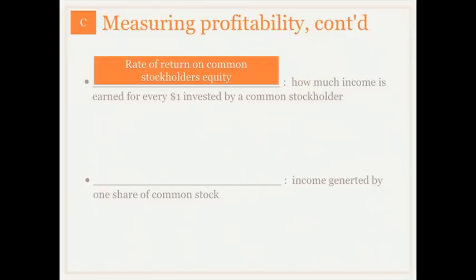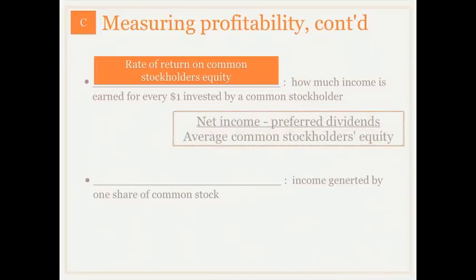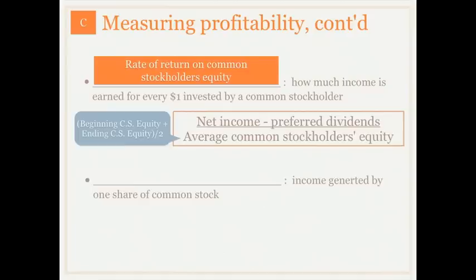This is how much income can actually be earned for every one dollar that's invested by a common stockholder. To calculate the rate of return on common stockholders' equity, we're going to take a company's net income, subtract their preferred dividends — because we're only interested in common stockholders' equity here — and then divide that by the average common stockholders' equity. To get average common stockholders' equity, we take beginning common stockholders' equity, add the ending common stockholders' equity, and divide that summation by two. That will be our average.